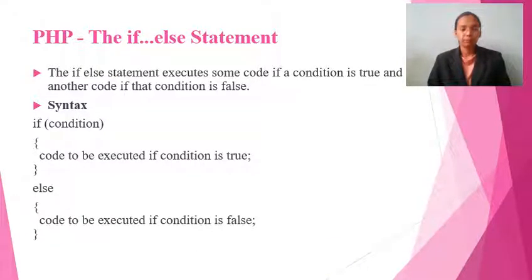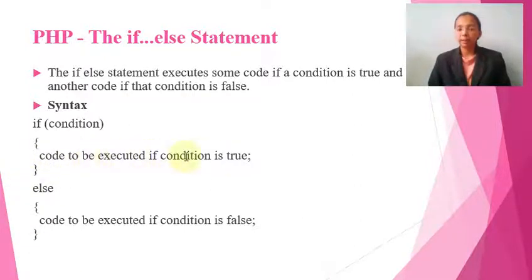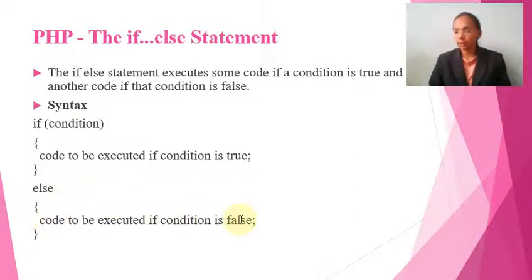Now we will see the if-else statement. In if-else, if the first condition after 'if' is true, execution jumps out automatically. But if that condition is false, then execution goes to the else part and the else condition's code is executed. Let us look at an example.